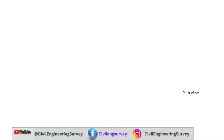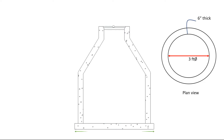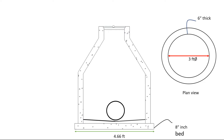Let's start. First we draw a plan view of circular manhole — outer side and inner side. Inner side diameter is 3 feet, thickness of wall is 6 inches. In the section of this manhole, bed diameter is 4.66 feet, thickness of bed is 8 inches thick, with benching also included. Pipe laying on benching: 8-inch diameter PE pipe, with 3-inch thick benching concrete.